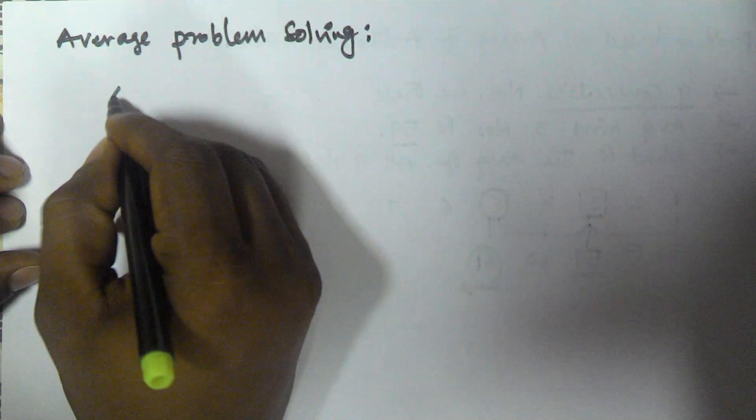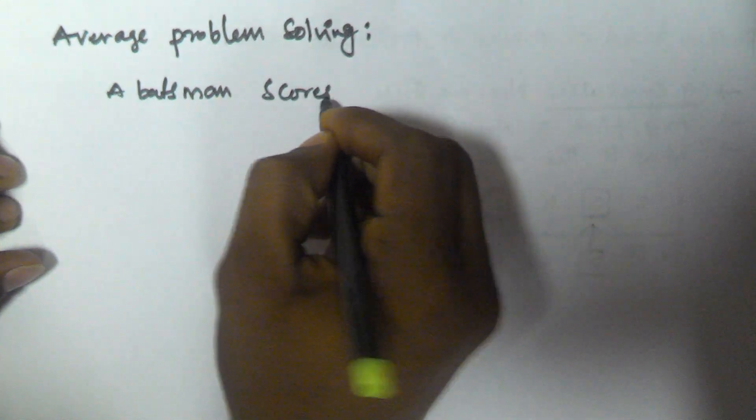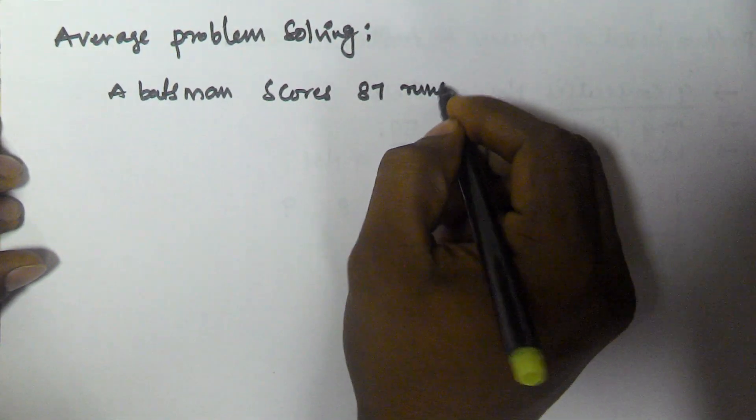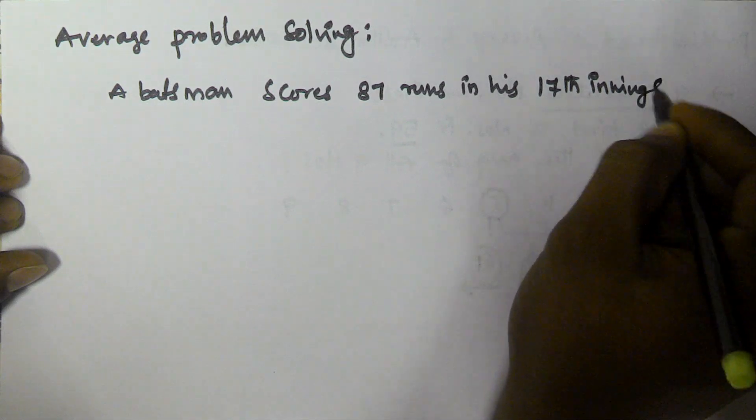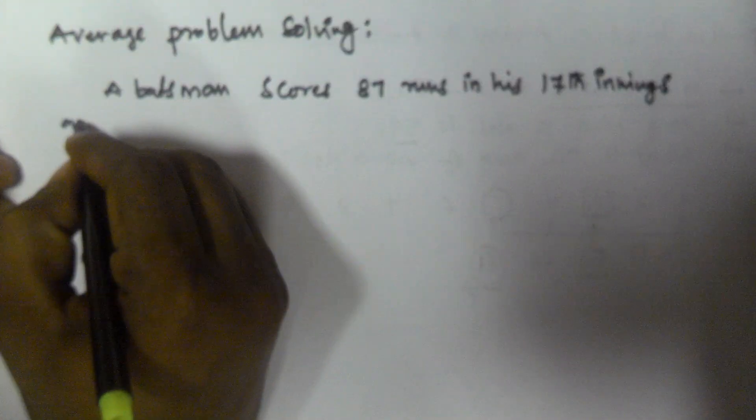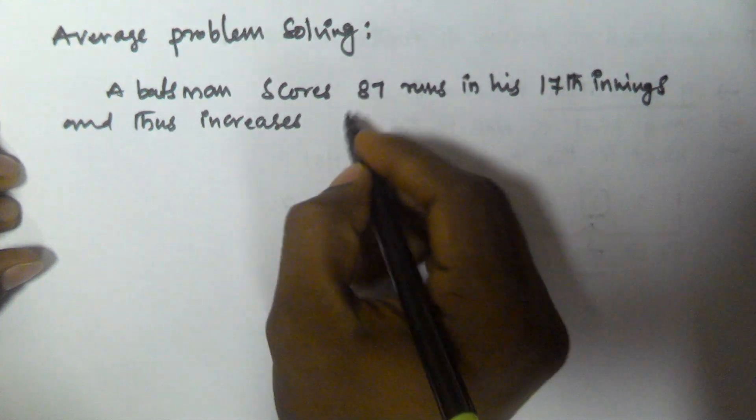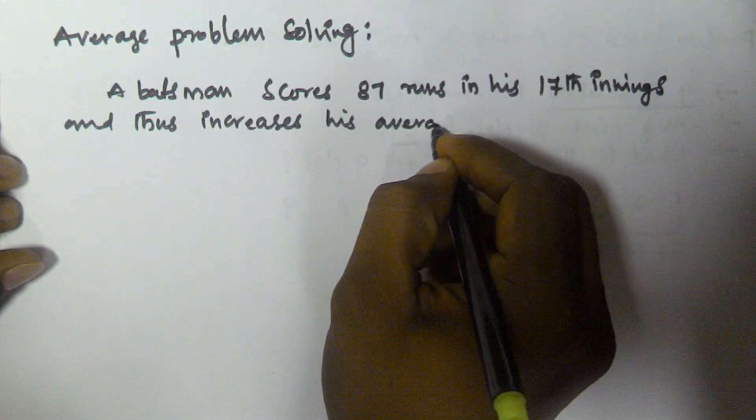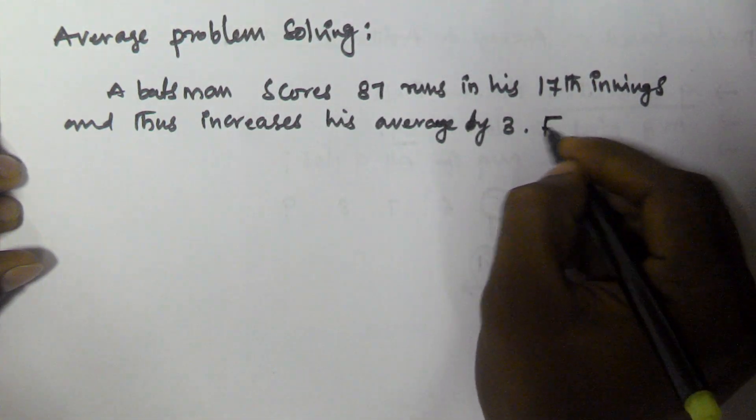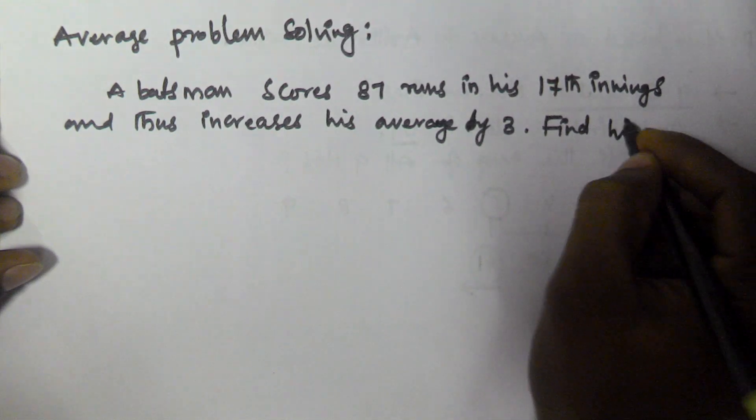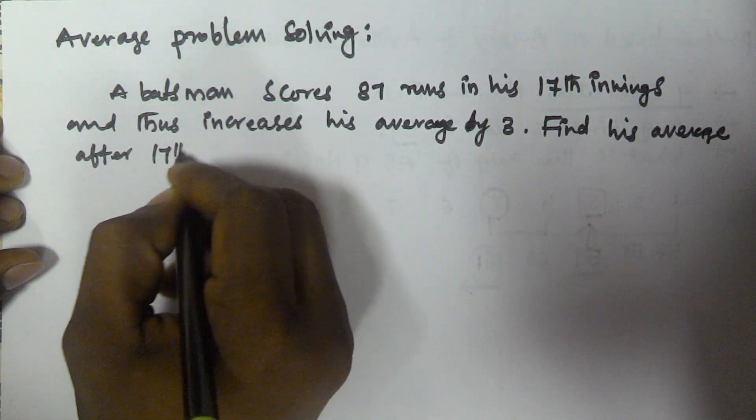So let us assume a batsman scores 87 runs in his 17th innings and thus increases his average by 3. Find his average after 17th innings.